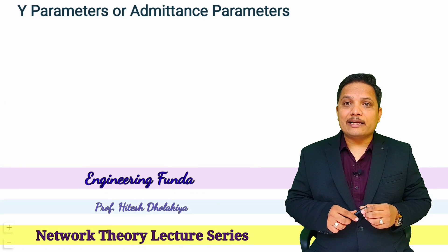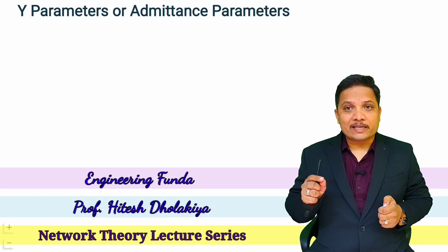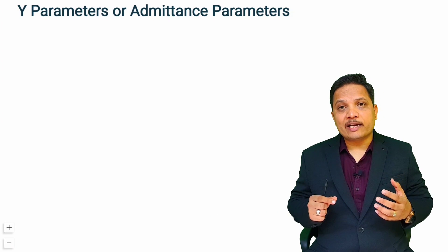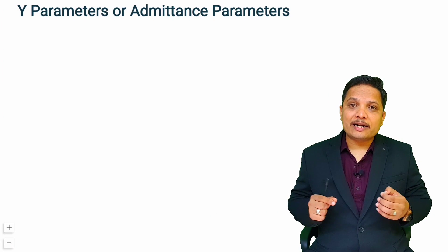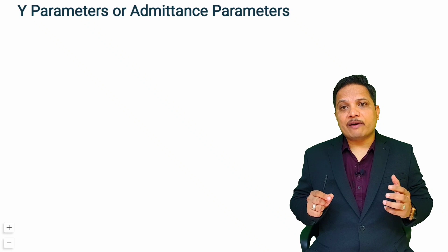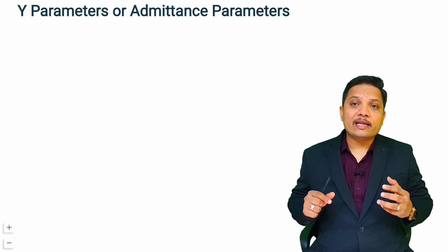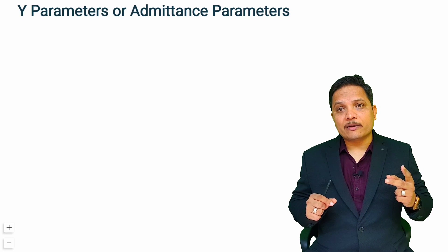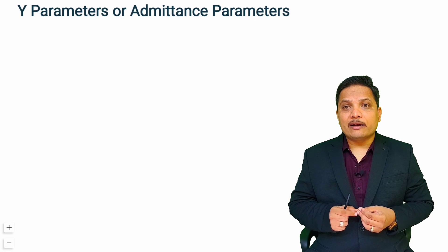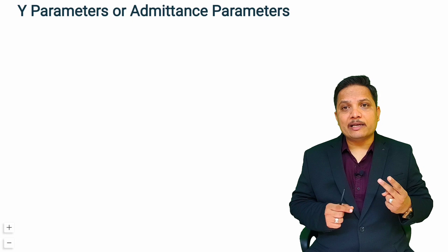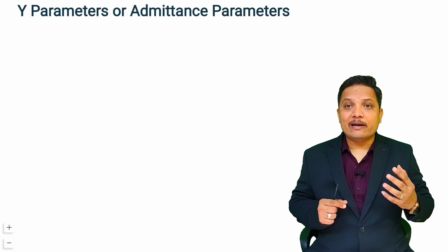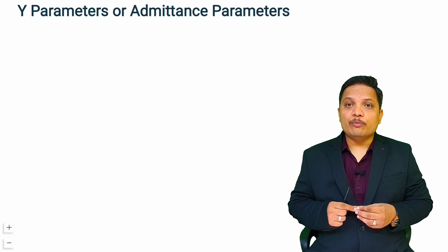Welcome to network theory lecture series. In this video, I will explain Y parameter in two port network. Y parameter is also referred to as admittance parameter. I will explain the basic equations of Y parameter, how we can measure Y parameter in a two port network, the equivalent circuit of Y parameter, and two essential properties — reciprocity and symmetricity — that can be identified using Y parameter.